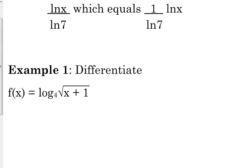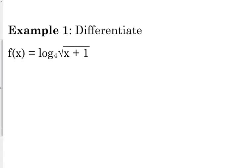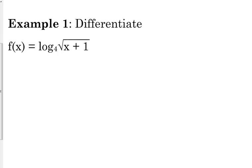So let's first of all use some properties of logs to rewrite this expression before we even take the derivative. First of all, let's use the change of base formula. So that says that the natural log of the square root of x plus 1 over the natural log of 4 is how we can rewrite that expression.